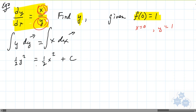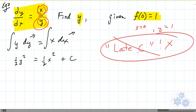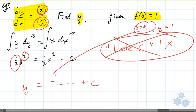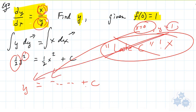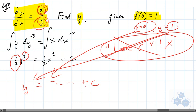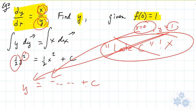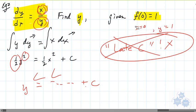I want to caution you on one thing: beware of the late c. Some students get to this point and say, I want to solve for y first, get y all by itself, and then plug in x equals zero and y equals one to solve for c. You can't do that, because you've changed a whole bunch of things and you won't get the right c. You have to substitute the initial values in right after you integrate, before you isolate for y and do any algebra.